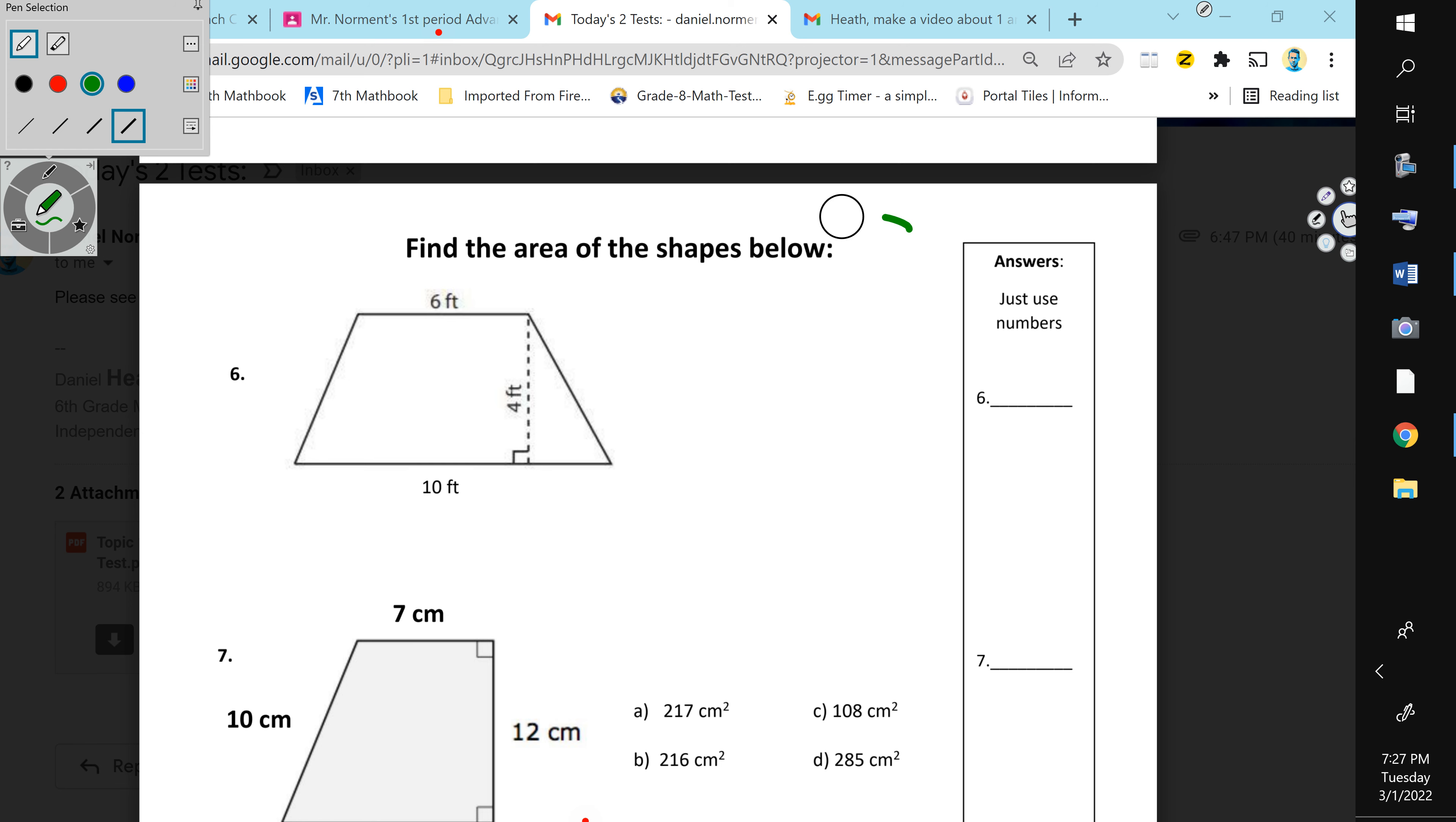Number six, your practice test, your study guide that we went over on Tuesday, it tells you, take the top plus the bottom, okay? You're going to add those two numbers together, and then you're going to multiply times four.